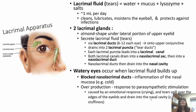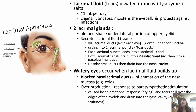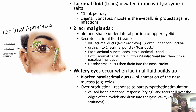The nasolacrimal duct drains into the nasal cavity — that's why if you cry really hard, your nose starts to run. Watery eyes can also occur if lacrimal fluid builds up due to a blocked nasolacrimal duct or inflammation of the nasal mucosa, like a cold. Overproduction of tears occurs in response to parasympathetic stimulation, such as an emotional response, causing tears to spill over and drain into the nasal cavity, resulting in nasal stuffiness and a runny nose.